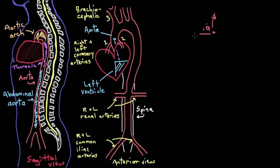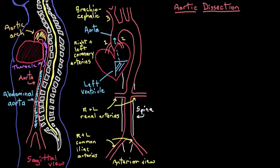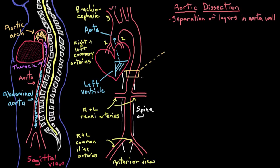By now it's clear that the aorta is really important — you definitely want your aorta to stay nice and healthy so that it can continue to be the main pipeline for your blood. But sometimes things go wrong. This brings us back to the condition mentioned at the start of the video: an aortic dissection, a life-threatening condition where there's a separation of the layers in the wall of the aorta. To really understand it, let's look at the anatomy of the aortic walls to see how this separation might happen.